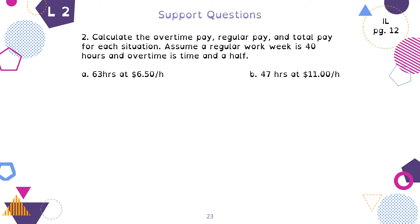Support question number two on page 12. Calculate the overtime, regular pay, and total pay for each situation. Assume a regular work week is 40 hours and overtime is time and a half. In situation A, you're working 63 hours at $6.50 an hour. Remember, the numbers in your booklet are not realistic, as in Canada you cannot make $6.50 an hour. For regular pay, you know it's 40 hours times $6.50.